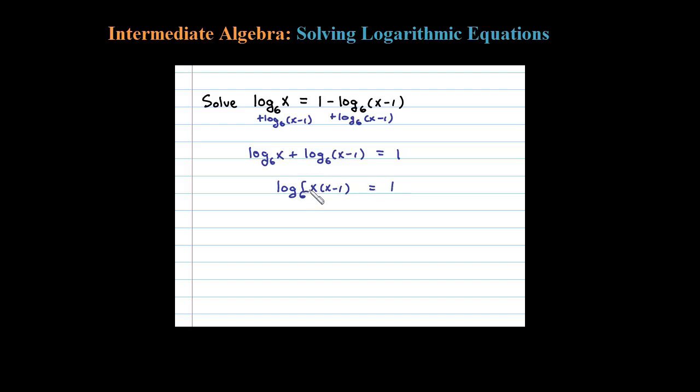Now we've isolated the log and we can apply the definition and convert this back to an exponential. So the base here is 6 to this power has to equal that argument. 6 to the 1 power has to equal x times x minus 1.